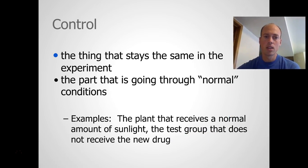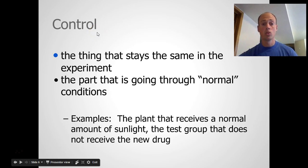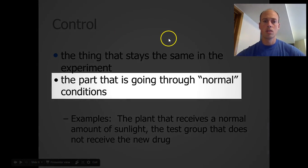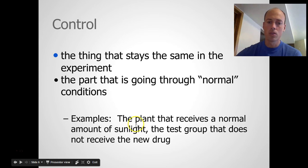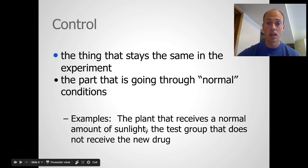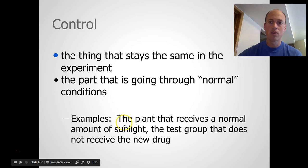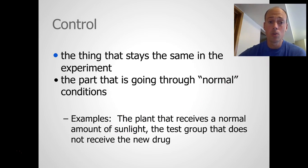The last thing here is the control. The control, or control group, is the thing that stays the same in the experiment — the part that's going through normal conditions. To refer back to our examples, the plant that receives a normal amount of sunlight is the control. It's nice to have something to compare the results of what you're testing to what would have actually happened under normal conditions. It's very important when setting up an experiment to have a control — a baseline to compare to.